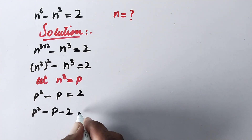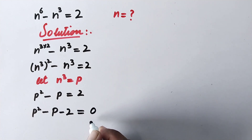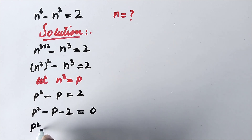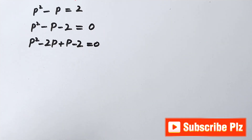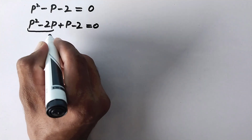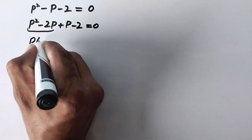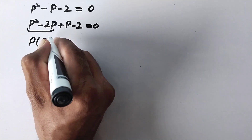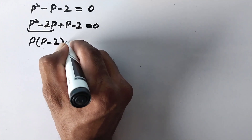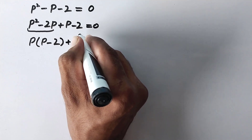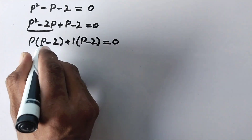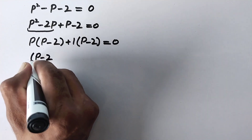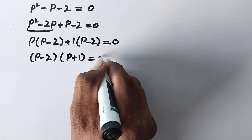Moving the 2 to the left side gives p squared minus p minus 2 equals 0. We can split the middle term and write p squared minus 2p plus 1p minus 2 equals 0. Taking p as a common factor from the first two terms gives p(p minus 2), and taking 1 as common from the last two terms gives 1(p minus 2) equals 0.